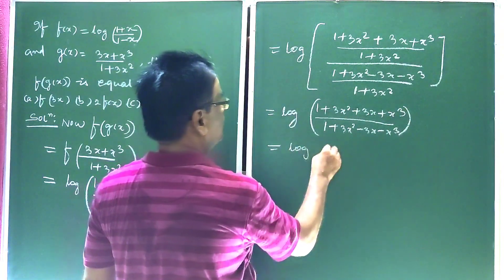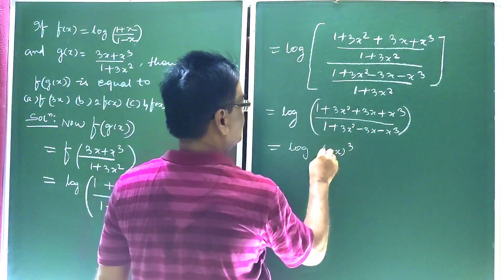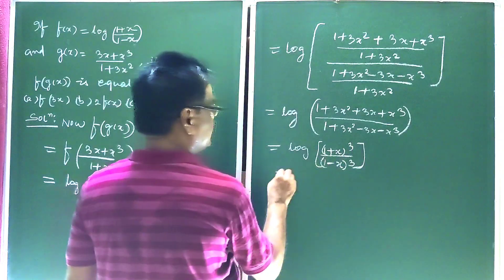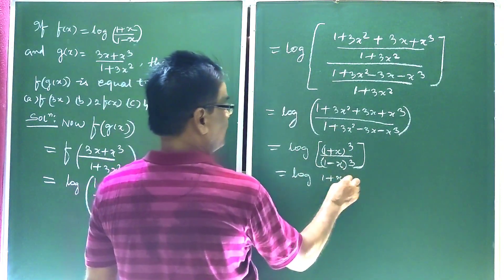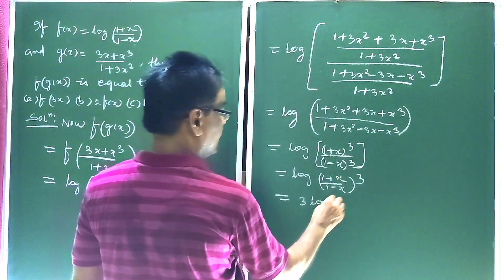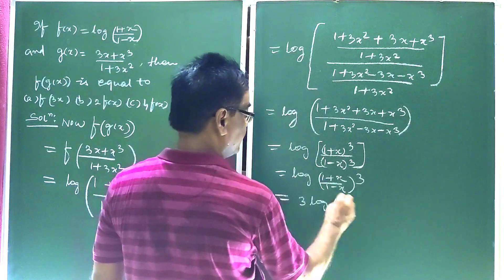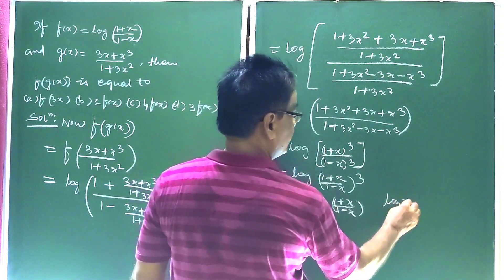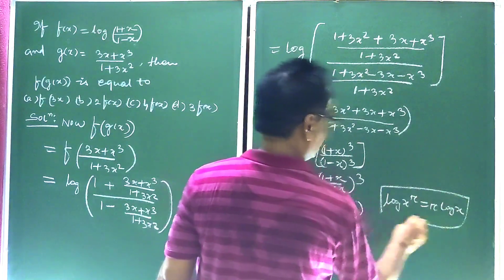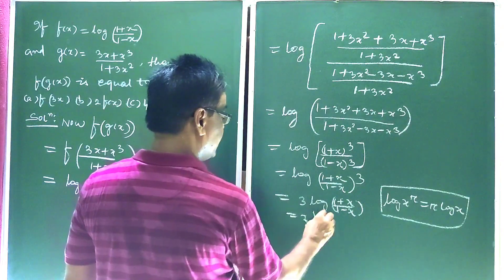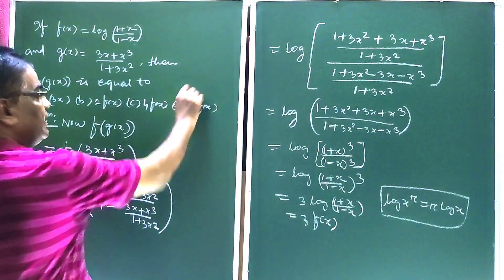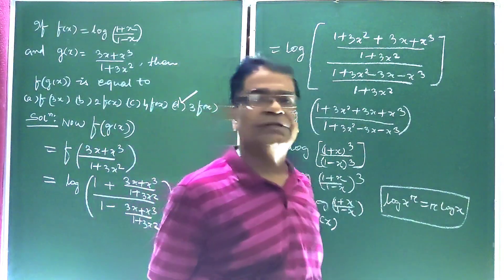This simplifies to log of (1 + x³)/(1 − x³), which equals log of ((1 + x)/(1 − x))³. Applying the logarithm power rule — log(x^r) = r·log(x) — this equals 3·log((1 + x)/(1 − x)), which is 3·f(x).